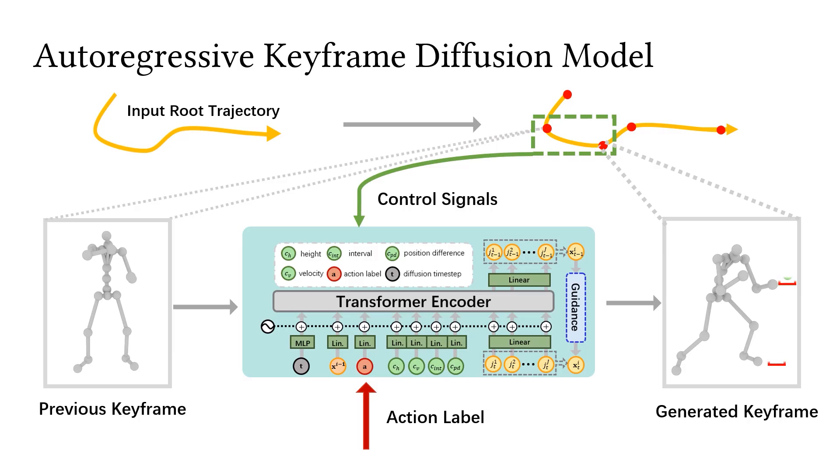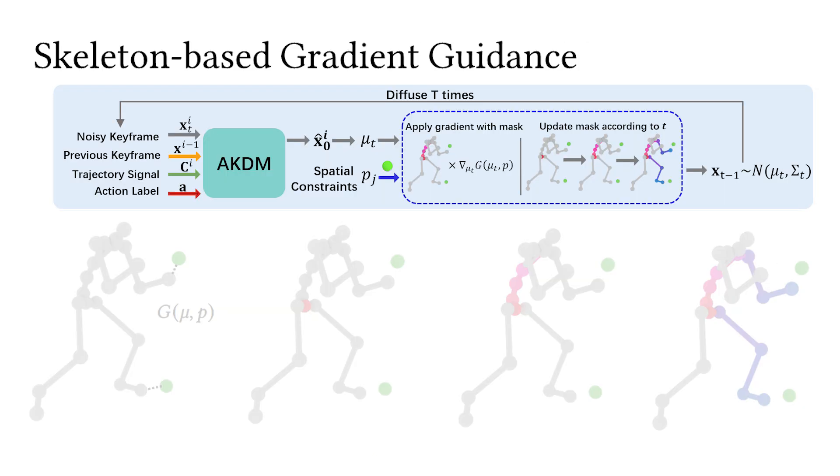AKDM also facilitates precise and flexible spatial constraints on specific joints during keyframe generation. This is enabled by our skeleton-based gradient guidance method. At each denoising step, we compute a goal function that estimates the distance between the predicted joint positions and the target.